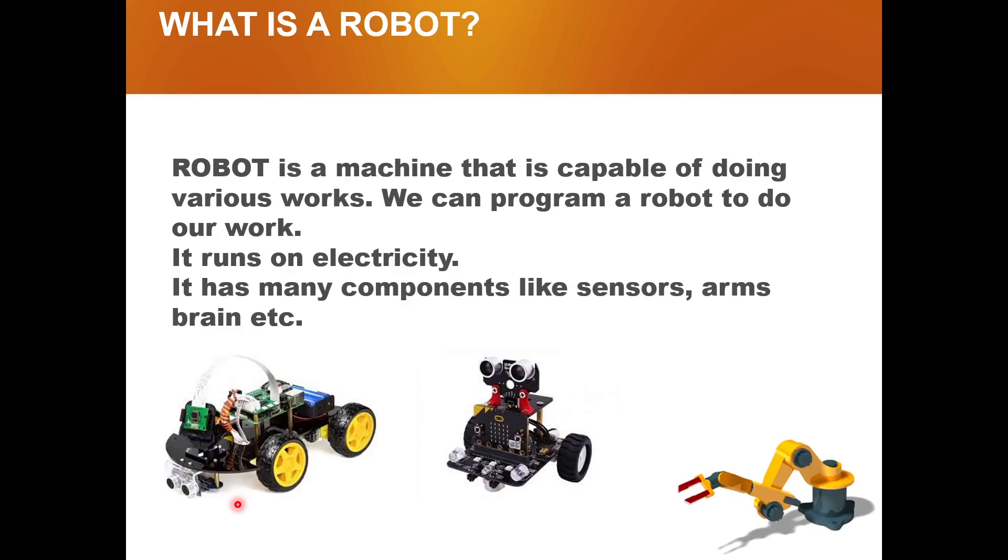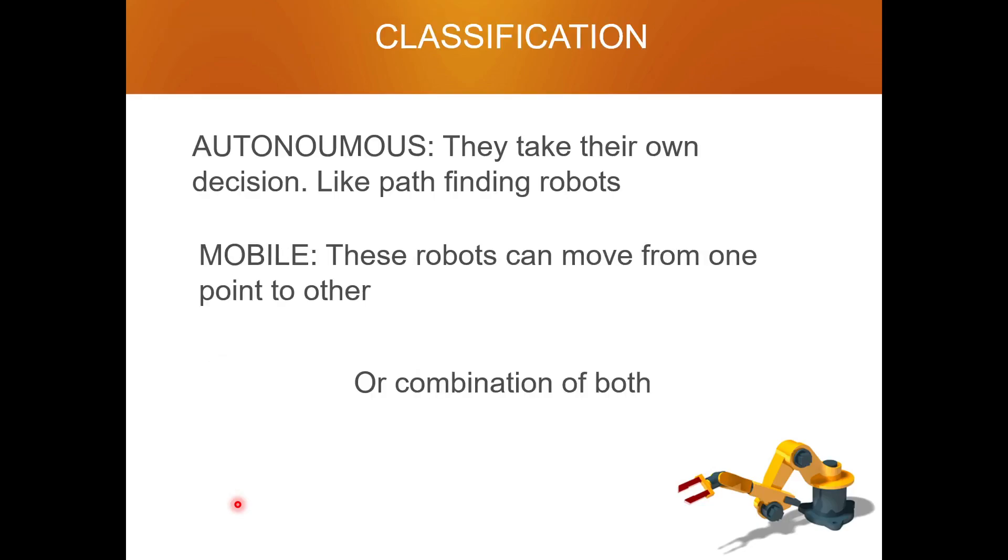When we see the classification, there are basically two types. On a broader perspective we can classify into two different categories: one is autonomous and second one is mobile. Autonomous robots take their own decision, like path-finding robots. A path-finding robot decides which path it should take to move. It will always follow the black line.